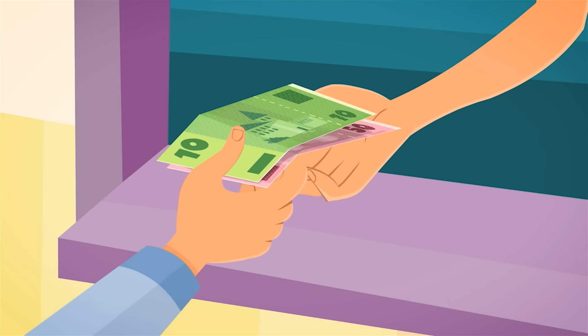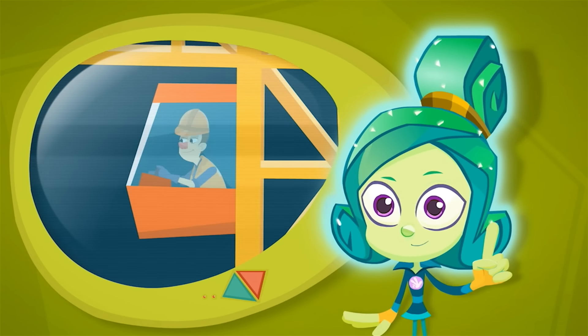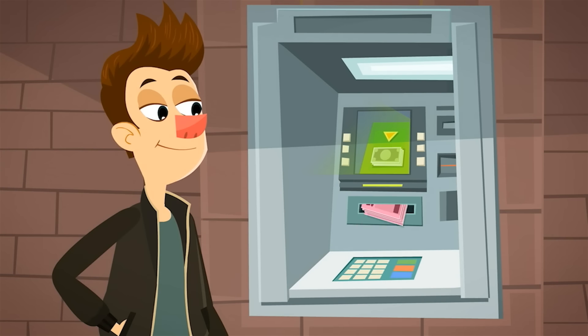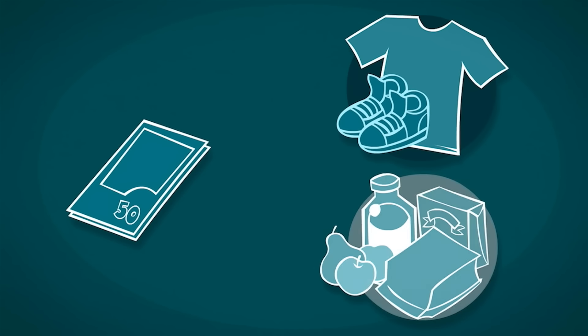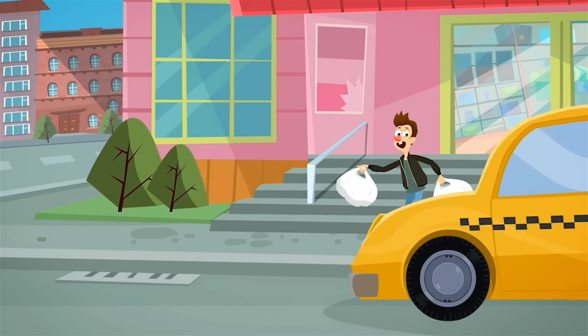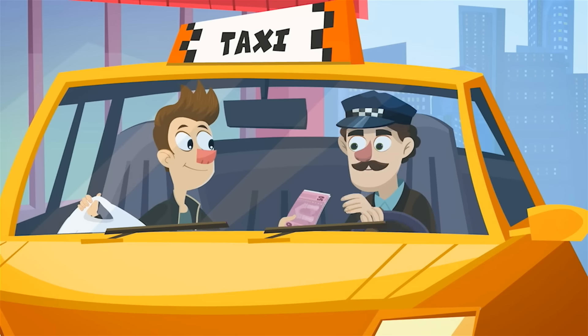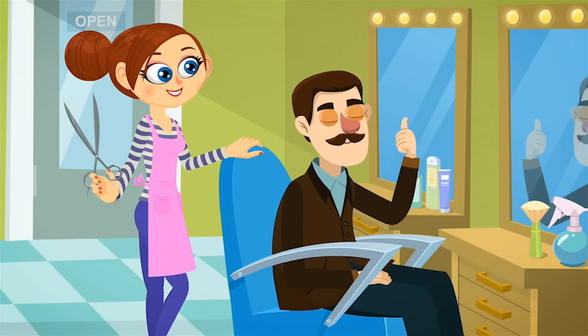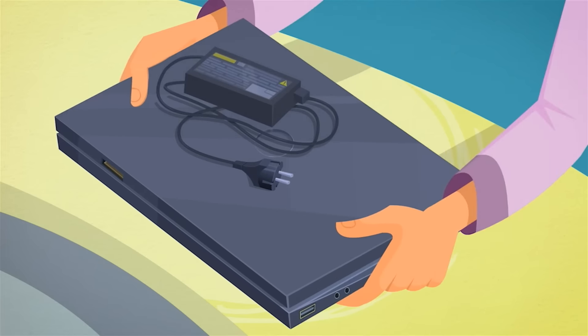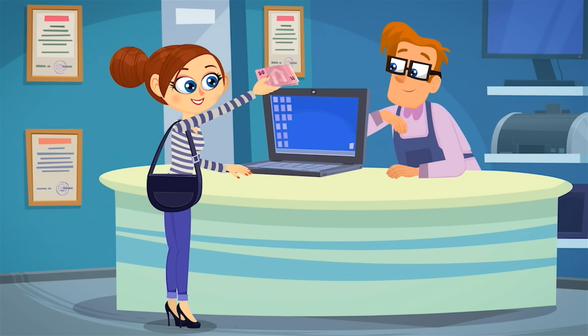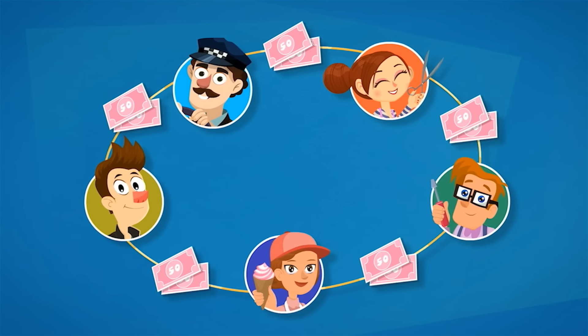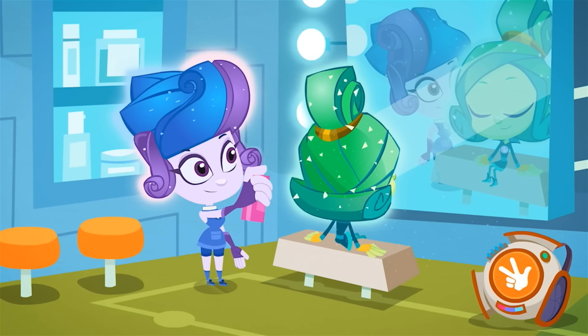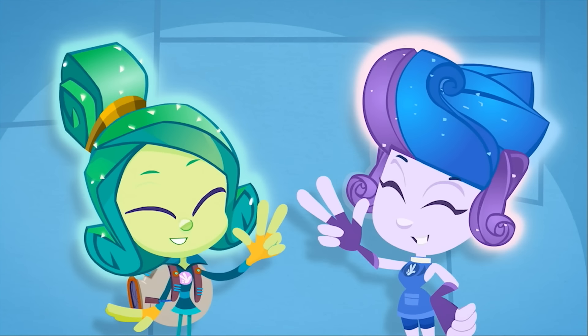Money constantly moves from one hand to another. A person does his job at work, and in exchange, he gets money for it. He can use the money to buy things he wants, like clothing or food. Or he can pay somebody else for their work. Like getting a ride from a taxi driver, a haircut from a hairdresser, or a computer repaired by a technician. All people take part in the circulation of money. But unlike people, Fixies don't use any money. We do just fine without it.